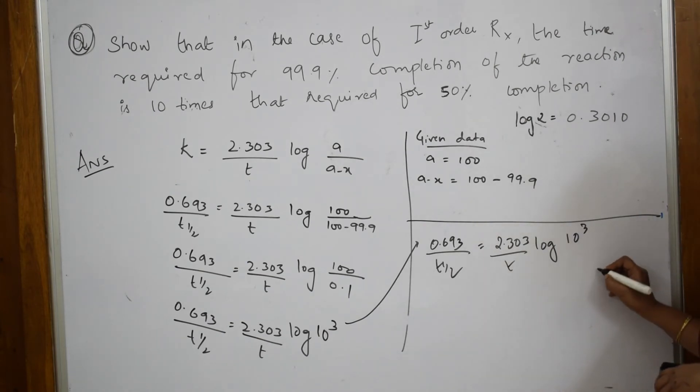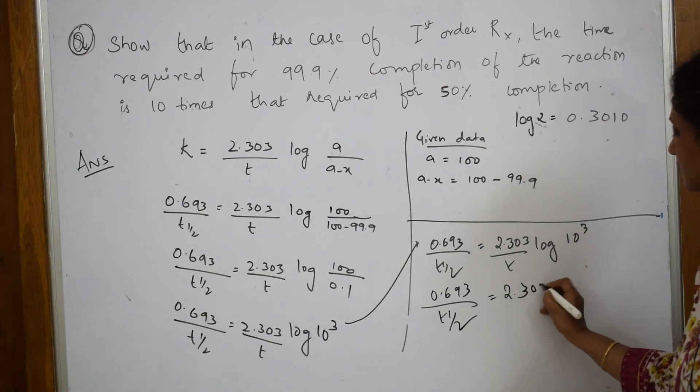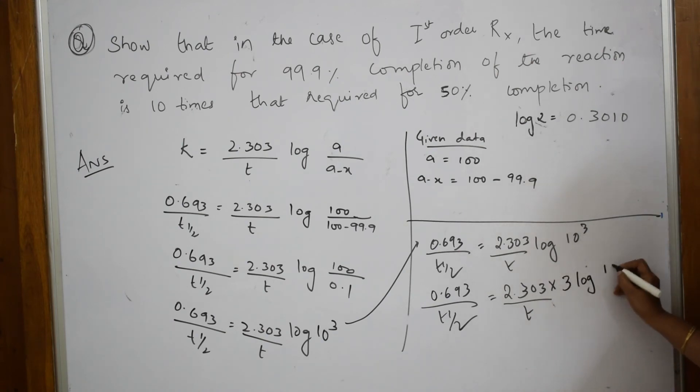Because when this goes up, 10 raised to 3. The sum is still not completed. You still have to equate this equation. Let me copy the same here. 0.693/t_half = 2.303/t log(10^3). Now we know if I'm writing log(10^a), it can be written as a·log(10). Because log 10 is 1.